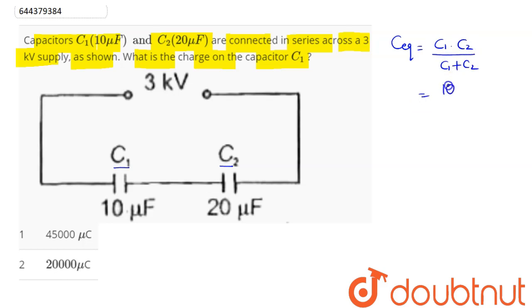So this is equal to 10 into 20 divided by, in the denominator there is 10 plus 20. So this comes as 200 by 30, which is equal to 20 by 3.